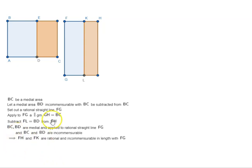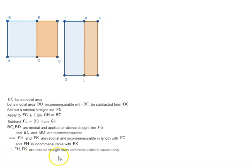That implies FH and FK are rational and incommensurable in length with FG, and FH is incommensurable with FK. Therefore FH and FK are rational straight lines commensurable in square only, which means FH minus FK — that is, KH — is an apotome.